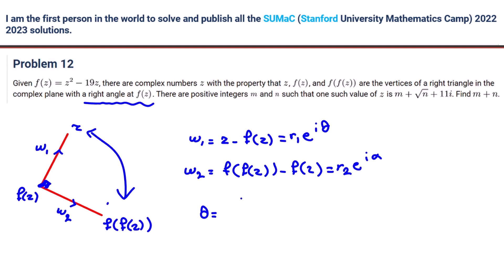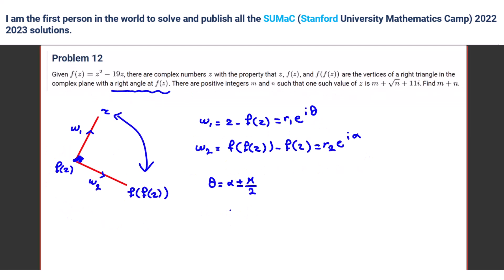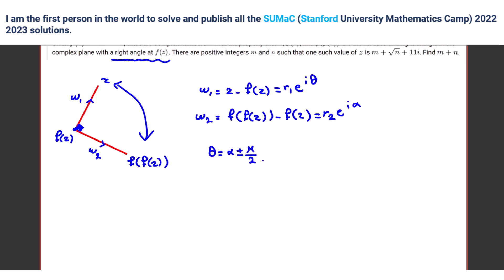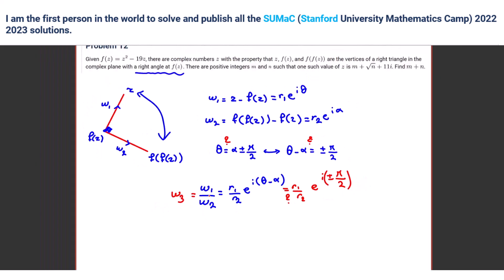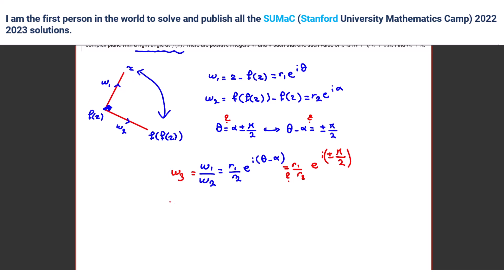And because, as you said, we can switch them: α plus or minus π/2. So how can we write this as a mathematical equation? We can say θ minus α is plus or minus π/2. So if we divide W1 by W2, it's R1/R2 · e^(i(θ-α)). We want to prove this equals e^(i·(±π/2)). Let's call W1/W2 as W3 — we should prove that the argument of W3 is plus or minus π/2.